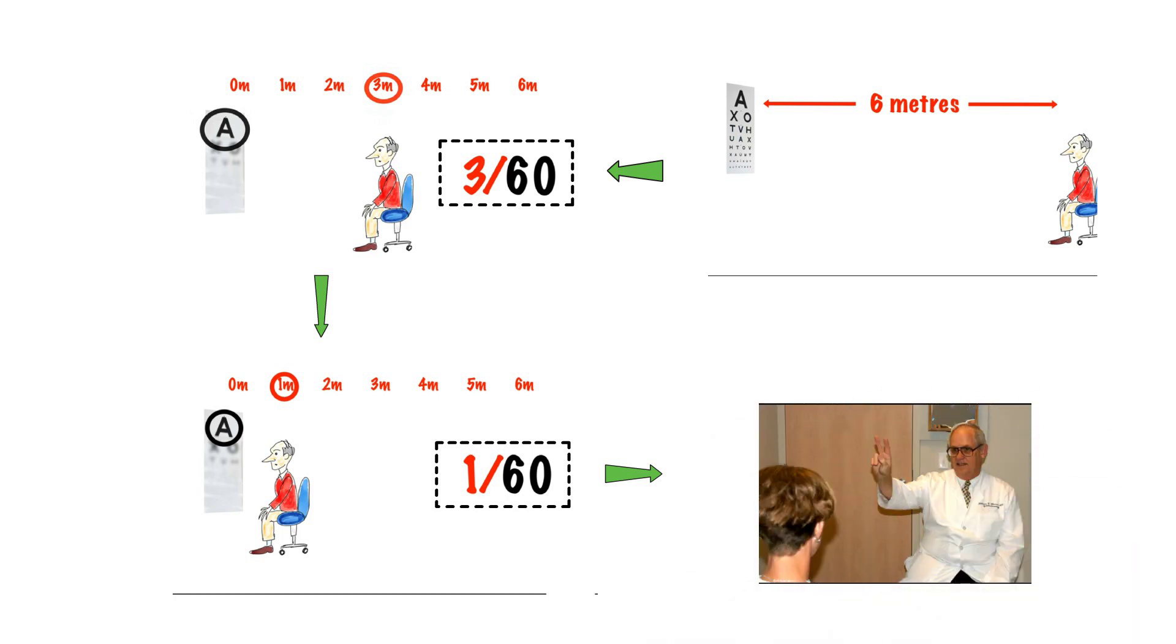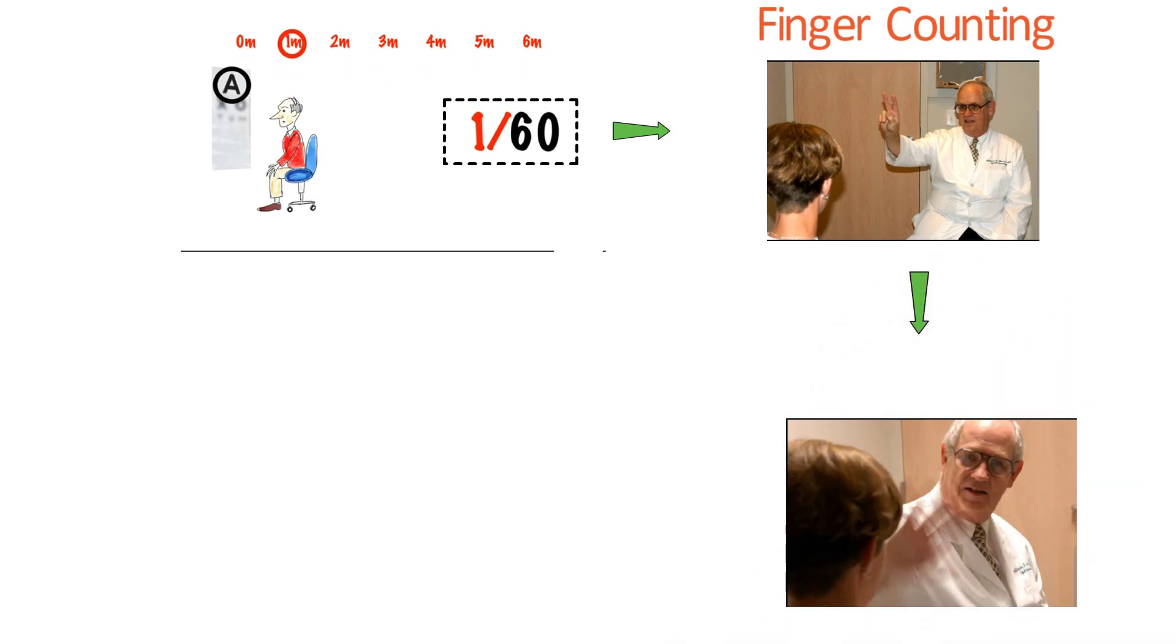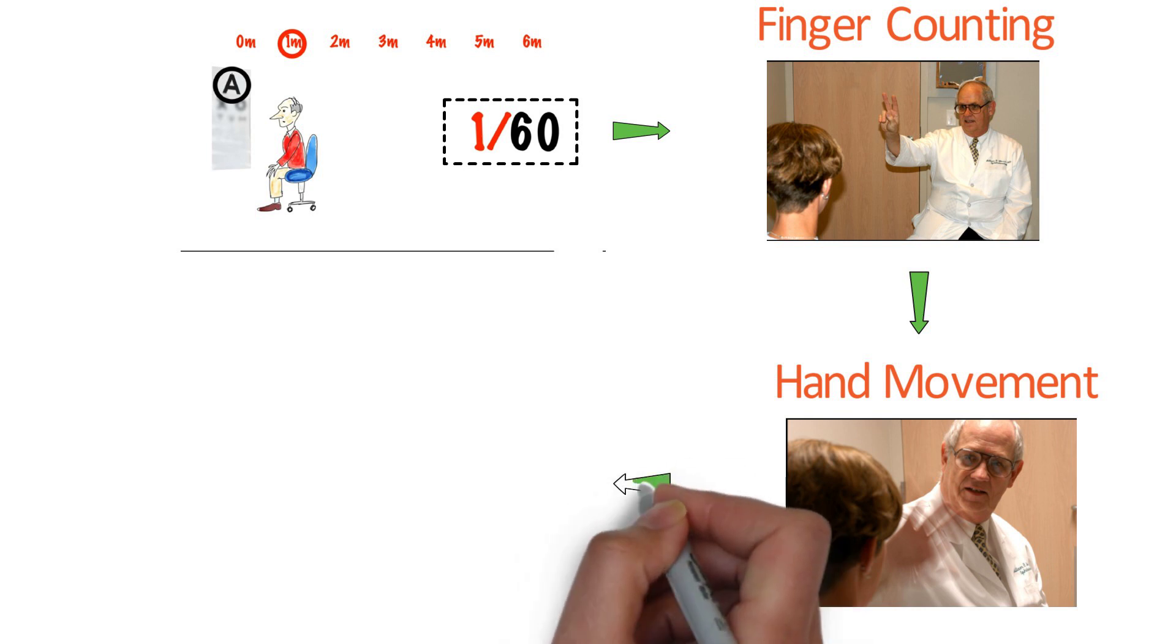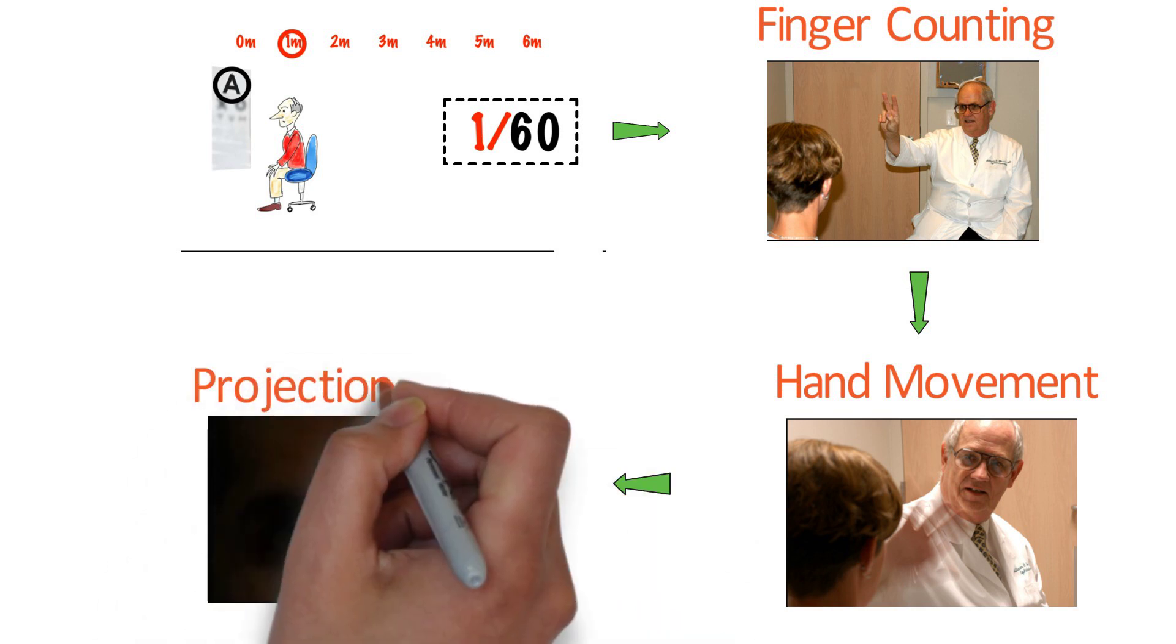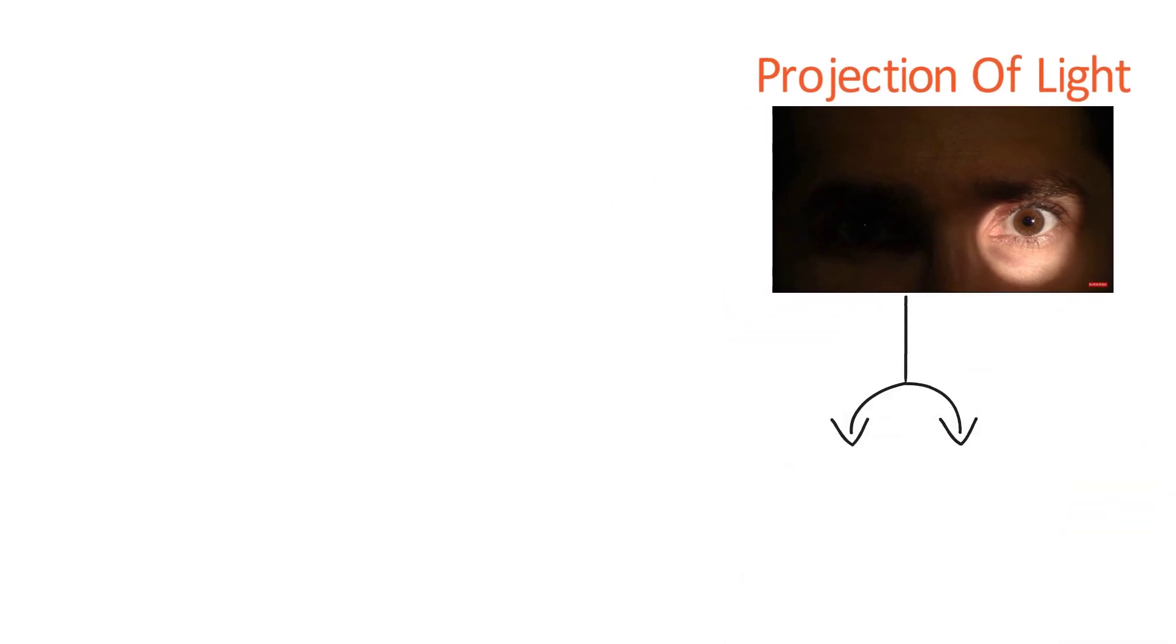If the vision is less than 1 by 60, we shift to finger counting test. Fingers are kept at 1 meter and if not answered by the patient then near the face. If the finger test is negative, we move on to hand movement test. If the patient cannot distinguish the hand movement that is hand movement negative, we check whether the patient can perceive light through projection of light test. If not, the vision is said to be PL negative and the patient is called absolutely blind.